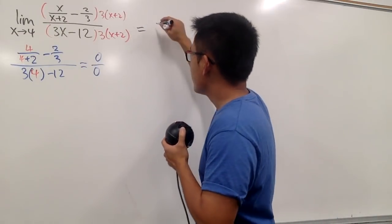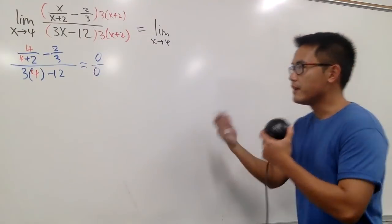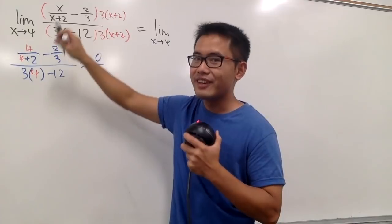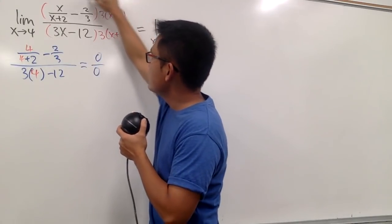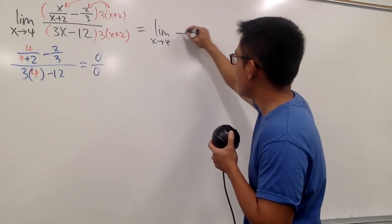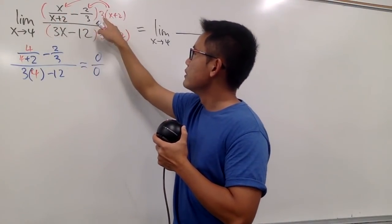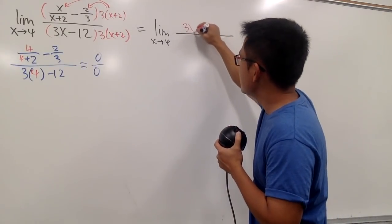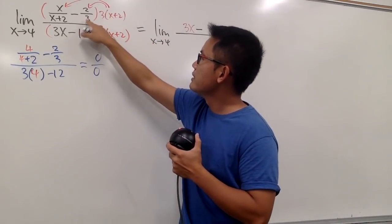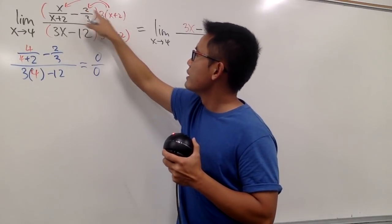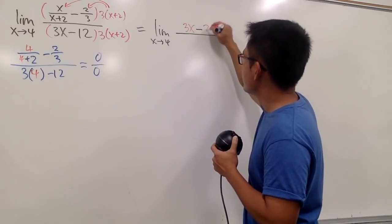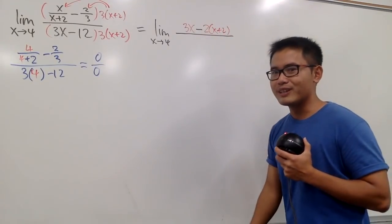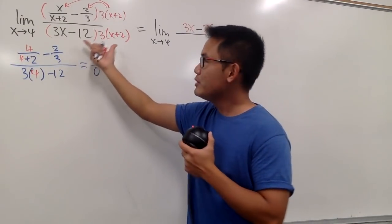We multiply the top and bottom by the least common denominator of the small fractions, which is 3 times (x + 2). Still write down the limit as x approaching 4 since we haven't evaluated yet. On the numerator, x over (x + 2) times 3(x + 2): the (x + 2) cancels, leaving 3x. Then minus 2 over 3 times 3(x + 2): the 3's cancel, leaving 2(x + 2). On the denominator, keep it as 3(3x − 12)(x + 2) — don't multiply out.